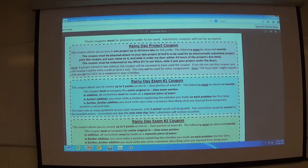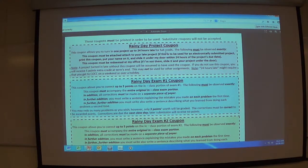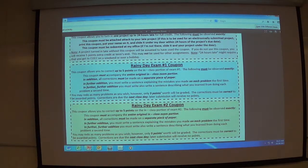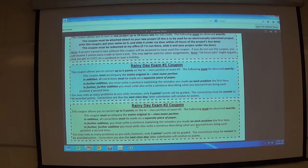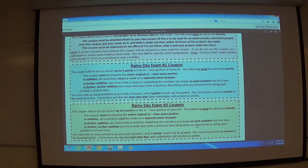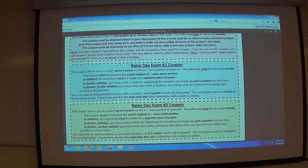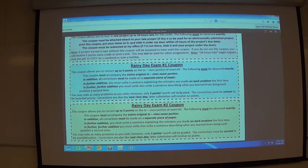You might remember that there's a rainy day project. Some of you have used it already. Most of you won't. And that's worth five extra credit points. Each of the first two exams though, the in class portions of the exams, you can correct up to five points on that and resubmit it and get full credit back on those. Up to five points. It's 10% of the actual in class grade. Make sure you read the entire thing on the coupon before you submit it to make sure you get the points.